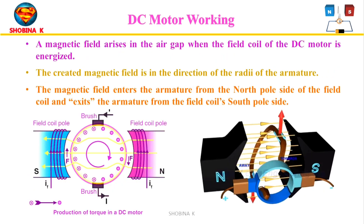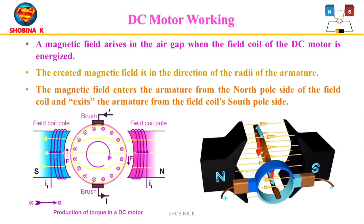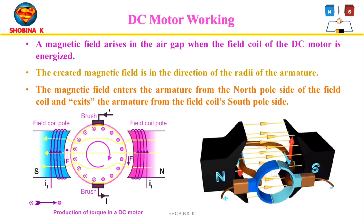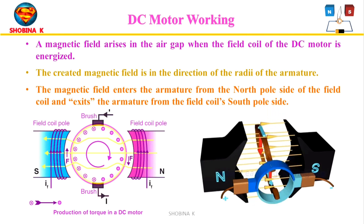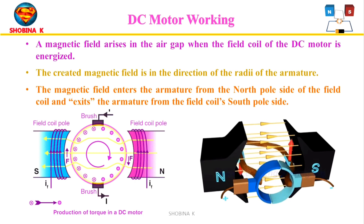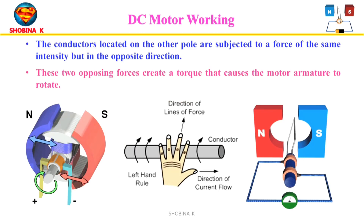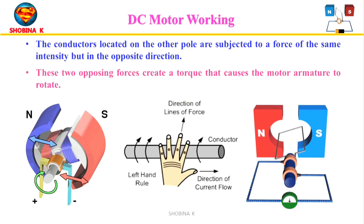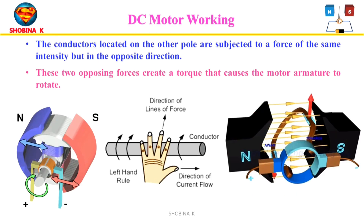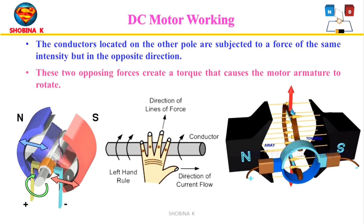When the DC motor field coil is energized, a magnetic field is created in the air gap in the direction of the radii of the armature. The magnetic field enters the armature from the north pole side and exits from the south pole side. Conductors placed on the other pole experience a force of the same intensity in the opposite direction, and these two opposing forces create a torque that causes the motor armature to rotate.